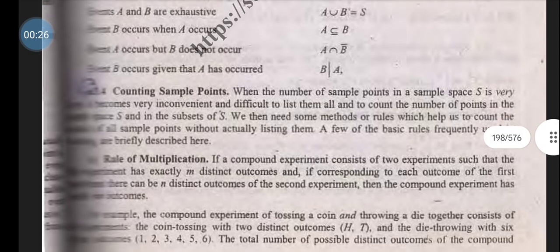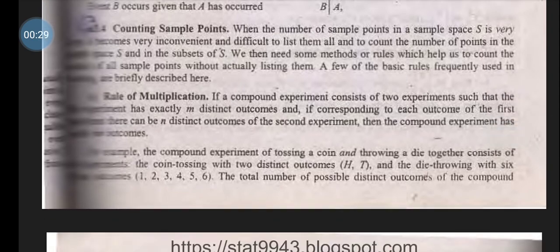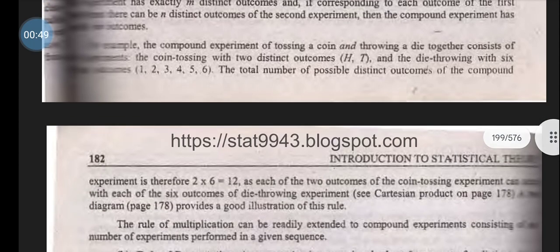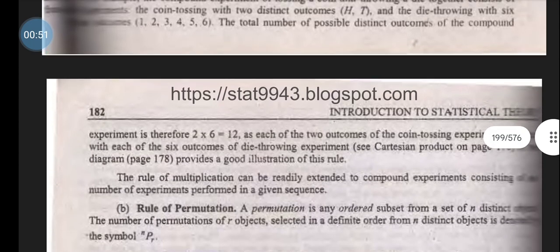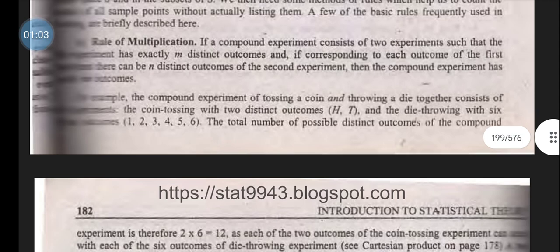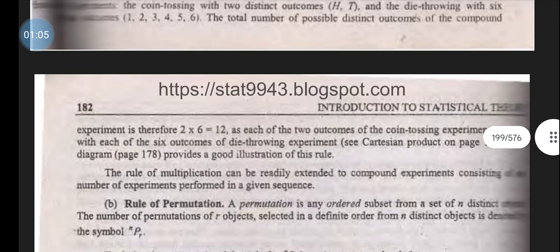First, the rule of multiplication. If a compound experiment consists of two experiments such that the first has exactly m distinct outcomes and for each outcome of the first there are n distinct outcomes of the second experiment, then we use 2 into 6 equals 12. For example, in a coin tossing experiment (head or tail) and die throwing experiment (outcomes 1, 2, 3, 4, 5, 6), each outcome of the coin can be paired with six outcomes of the die.